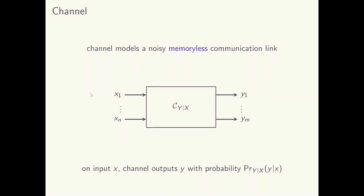A single use of the channel can be described as follows. When the input is x, the channel outputs symbol y with probability P(y | x).